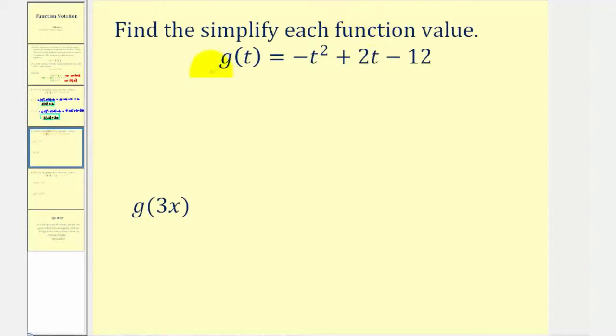Notice in this example our function is g of t, so the input is t and the output is g of t. The input is a variable expression, 3x, which means g of 3x will not give us a real value. It will give us another function, but the process is the same.